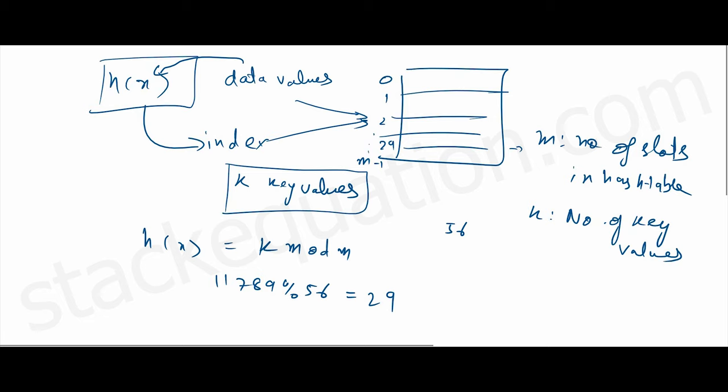Mod m means 11789 mod 56 means what is the remainder. It returns the remainder when we divide the number by 56. So 11789 mod 56 gives 29, so at the 29th index we'll store 11789. But please note that if we use this hash function it can result in collision.